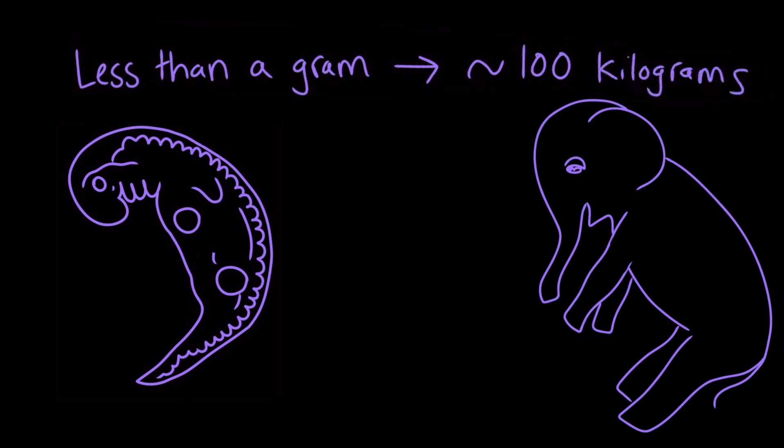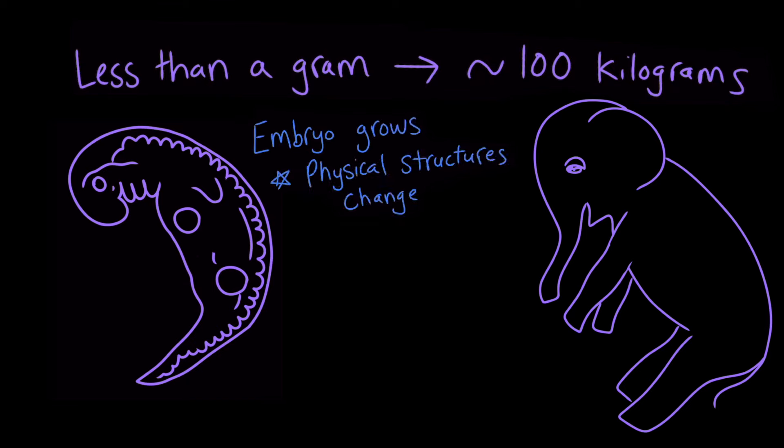Let's take a closer look at the kinds of changes the elephant embryo goes through as it develops. As an embryo grows, its physical structures change. Some structures become visible, and others disappear.